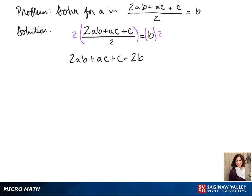We want all our terms with A on one side and all our terms that don't have A on the other side, so we subtract C. That gives us 2AB plus AC equals 2B minus C.